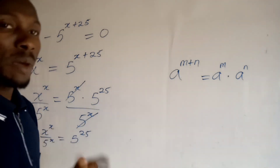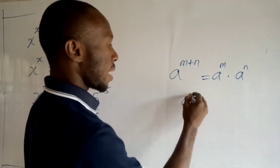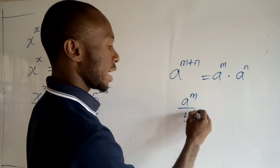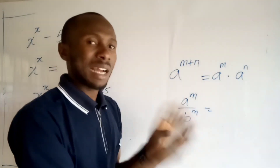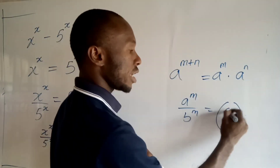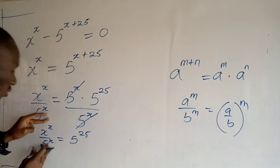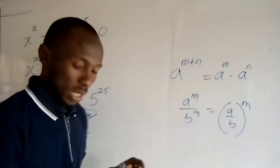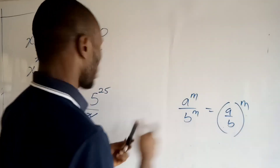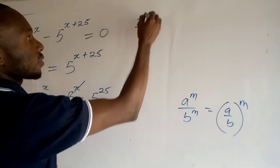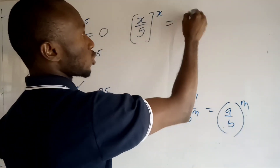Now remember the law of exponents that says if I have a to the power m over b to the power m — both with the same power — I can write them as a over b, all to the power m. Applying that here, this becomes x over 5, all to the power x, is equal to 25.